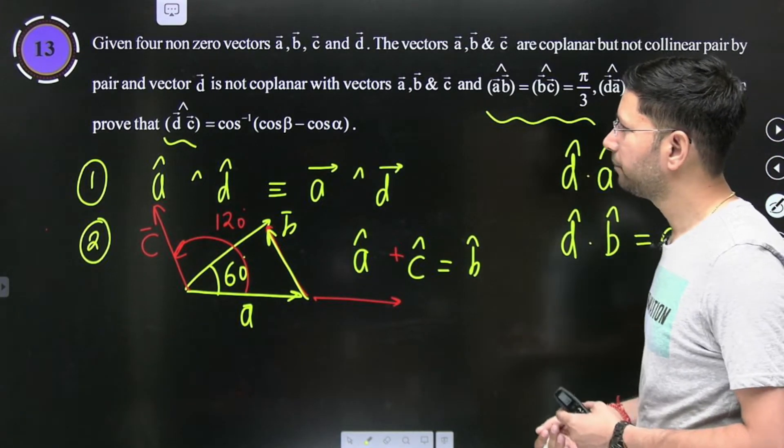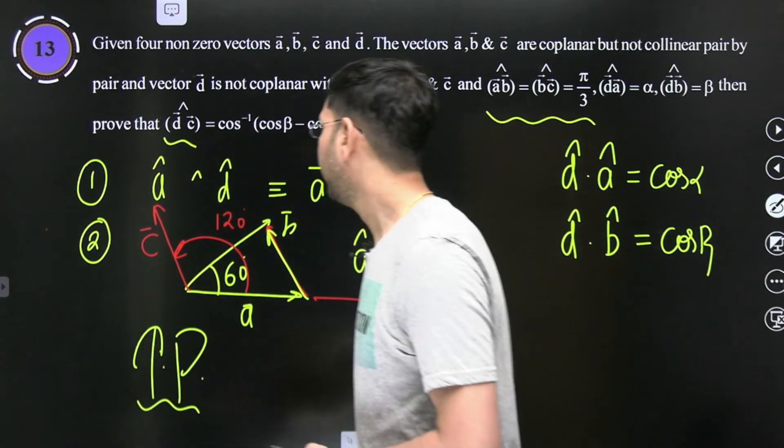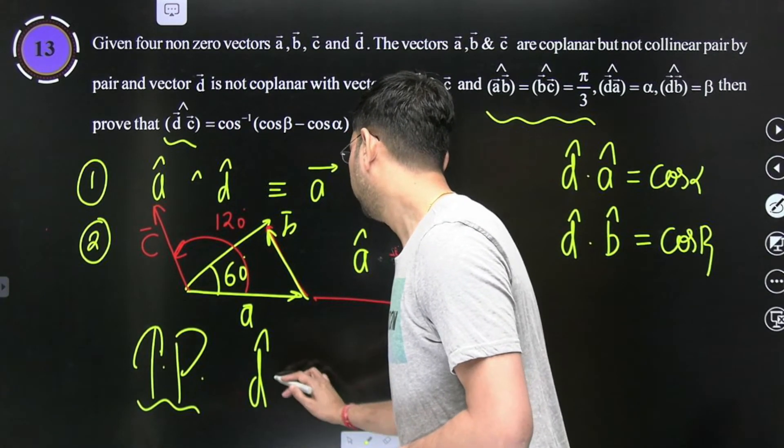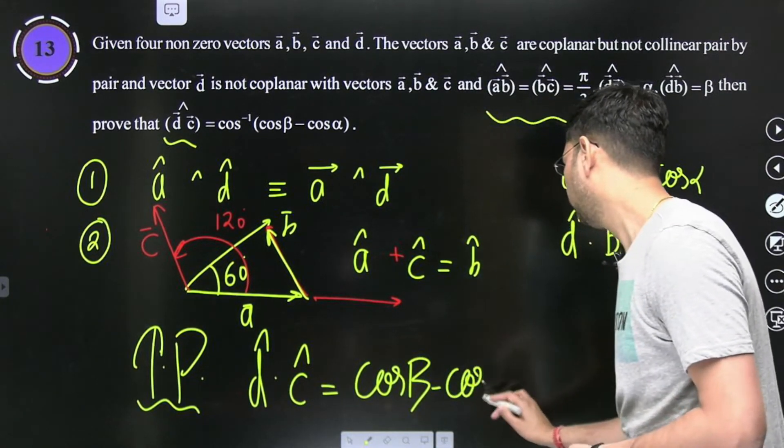Bachon, to prove hai na. Ab yeh sab condition apne ko de rakhe, aur apne ko prove karna hai ki d cap dot c cap is equal to cos beta minus cos alpha.